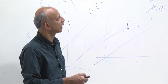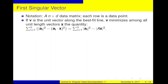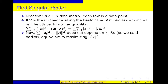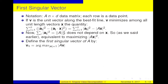First singular vector: A is an N by D matrix, each row is a data point. If V is the unit vector along the best fit line, then V minimizes among all unit length vectors the distance from the data points to the line. This is equivalent to maximizing the length of AV. So we define V1 as the argmax over all unit length vectors of the length of AV, and sigma 1 of A as that maximum length. This equals the best fit in the sense of minimizing sum of squared distances.